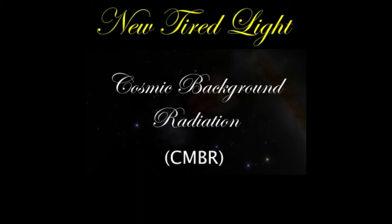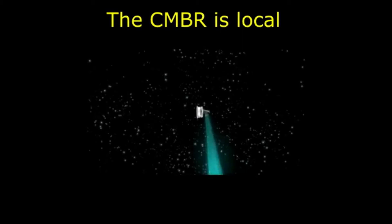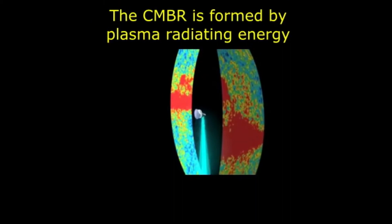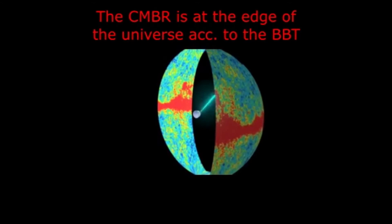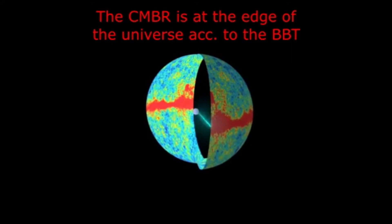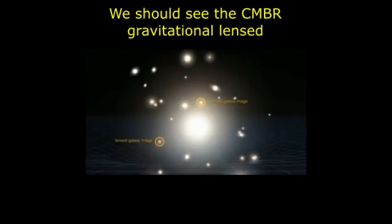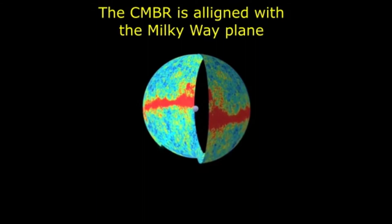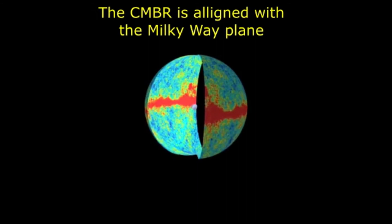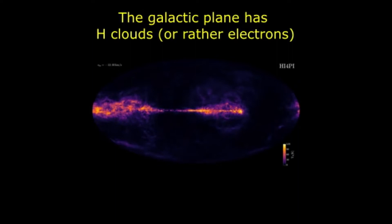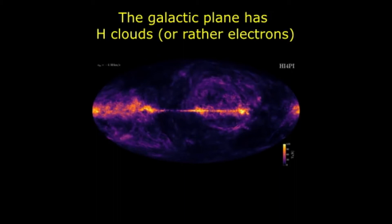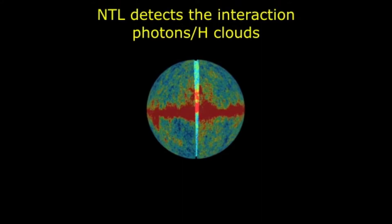According to the New Tired Light theory, the cosmic background radiation is local, formed by nearby plasma continuously radiating energy. In the Big Bang theory, the zone of radiation is at the edge of the universe, as if we were looking at the Big Bang itself. If the cosmic background radiation were at the edge of the universe, it should exhibit gravitational lensing — there is no evidence of this, therefore the cosmic background radiation must be local. Studies found that the cosmic background radiation is aligned with the plane of our galaxy, and galaxies are surrounded by hydrogen clouds as a consequence of galaxy formation — cosmic rays collide with hydrogen nuclei and create plasma.